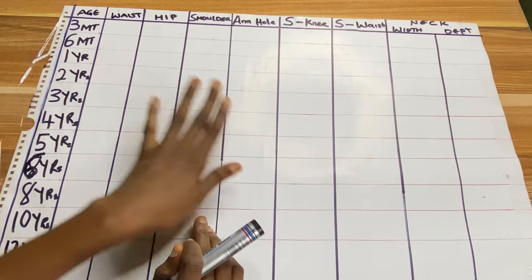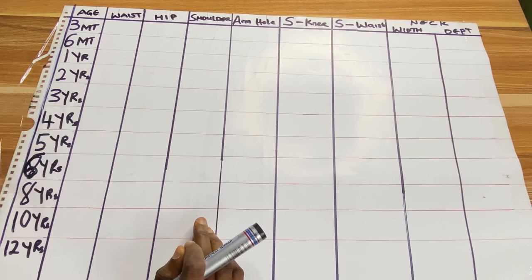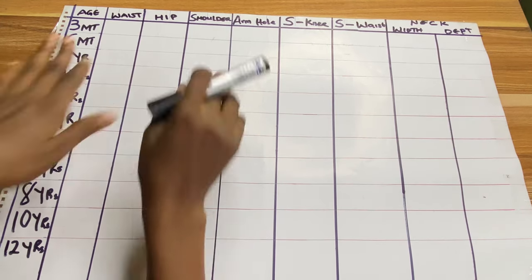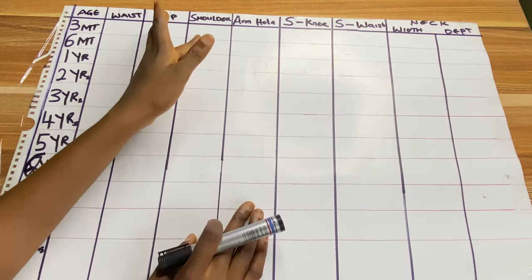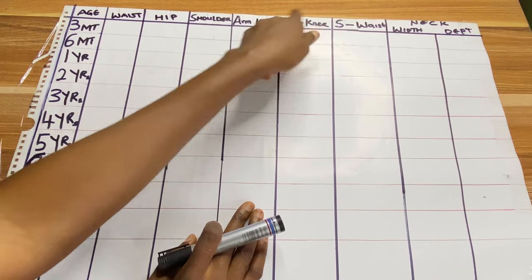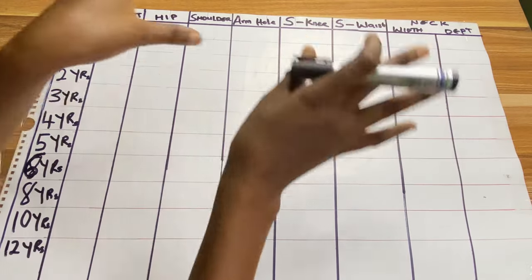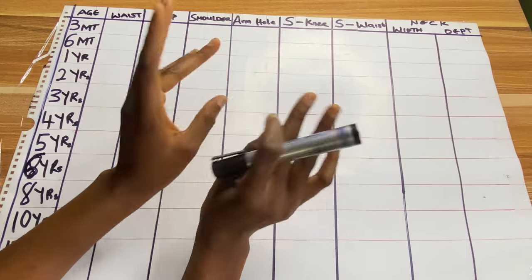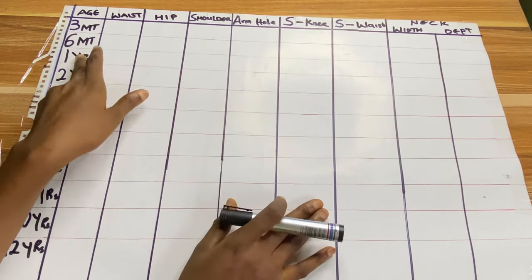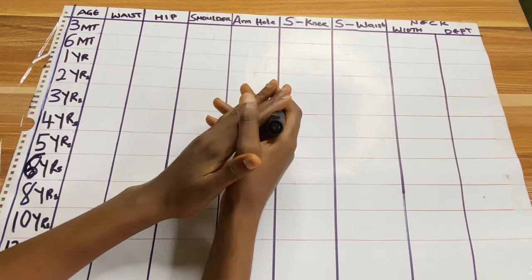If the baby is on a shopping site, please go ahead and take the measurement first. So here we have the three months, six months, and up to 12 months. If you see between six and eight there's no seven inches, and between 10 and 12 there's no 11 inches as well — this is because between those age gaps there is no much difference. Here we have the basic body measurements that we need: waist, hip, shoulder, armhole, shoulder to knee length, shoulder to waist, neck width, and neck depth.